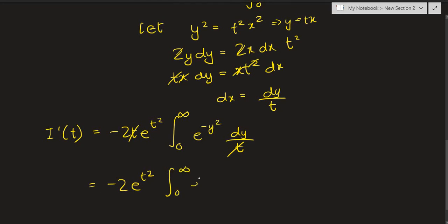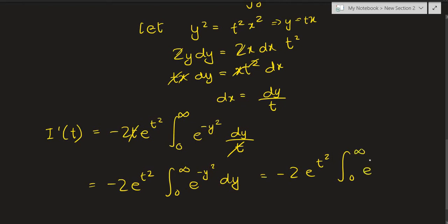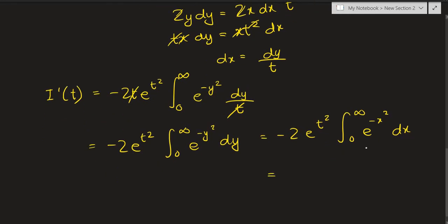We finally obtain negative 2 times e to the t squared power times the integral from 0 to infinity of e raised to negative y squared dy. Since the variable name doesn't matter for definite integration — as long as the integrand structure and bounds remain the same — we can write this as negative 2 e raised to t squared times the integral from 0 to infinity of e raised to negative x squared dx. That integral is just our Gaussian integral, so I prime of t equals negative 2 times e raised to t squared times g.